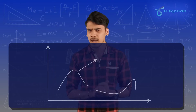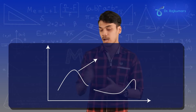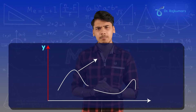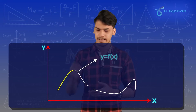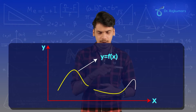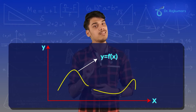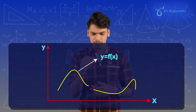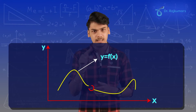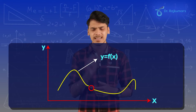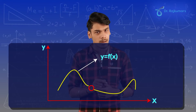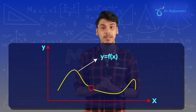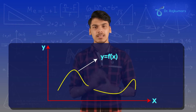Let me take another graph where I plot the output along the y-axis and input along the x-axis. I get a curve again, but this curve is not continuous. You can see there is some discontinuity in the curve — at certain points, there is no curve at all. Thus, the function is said to be a discontinuous function.